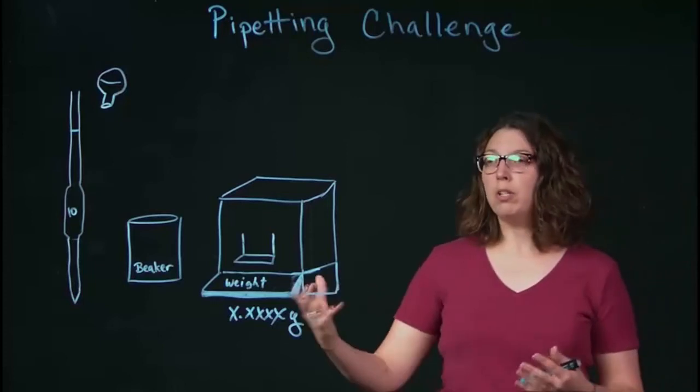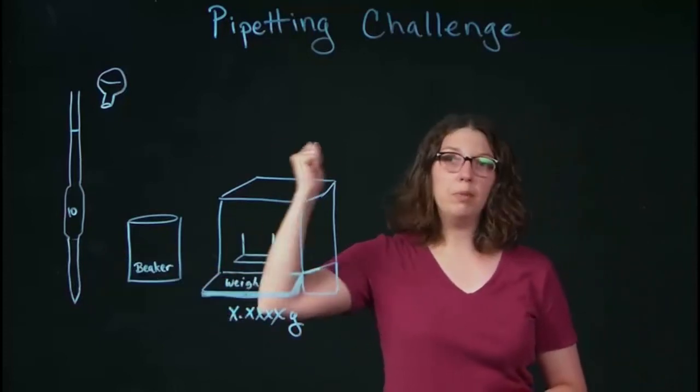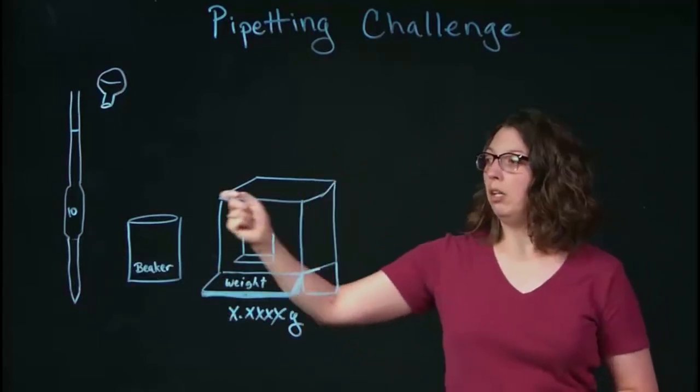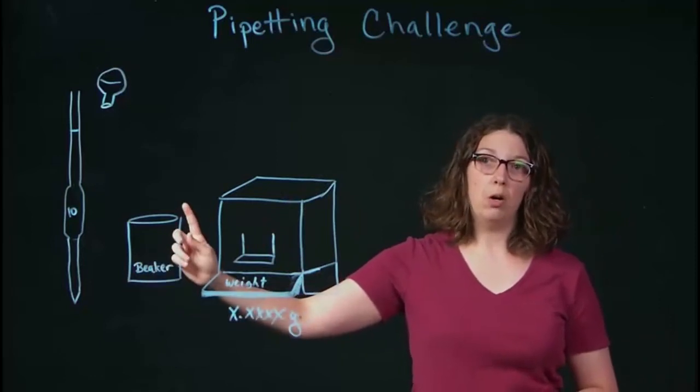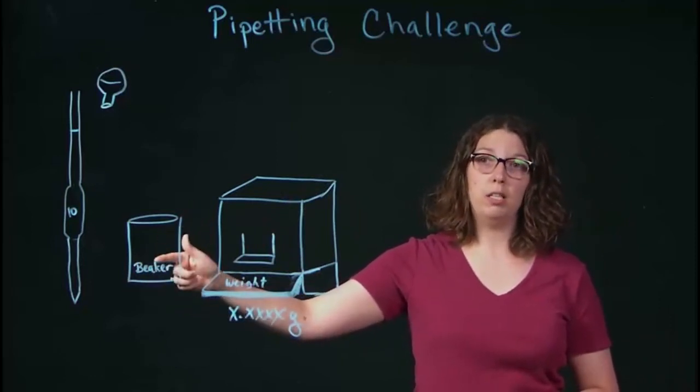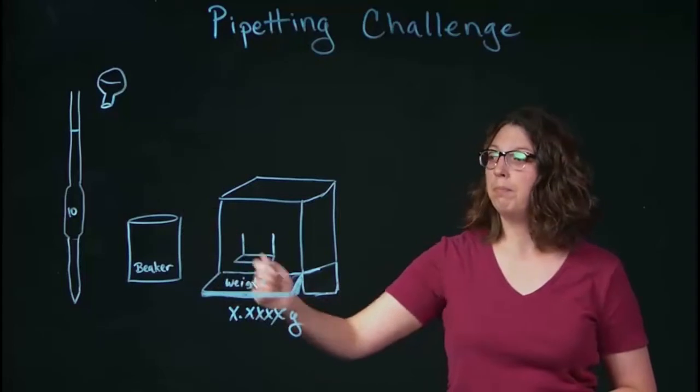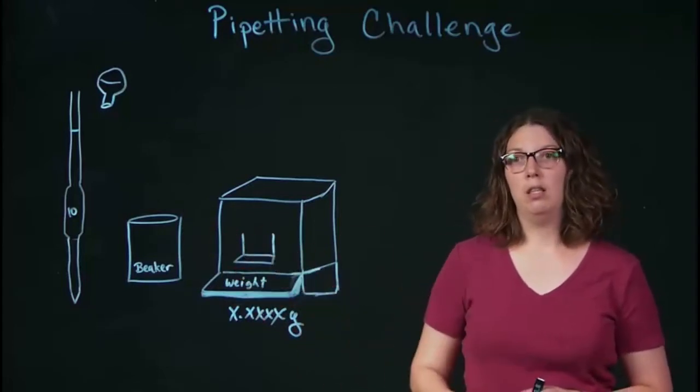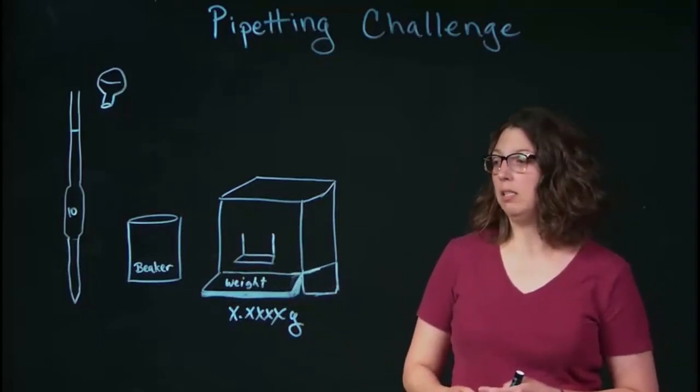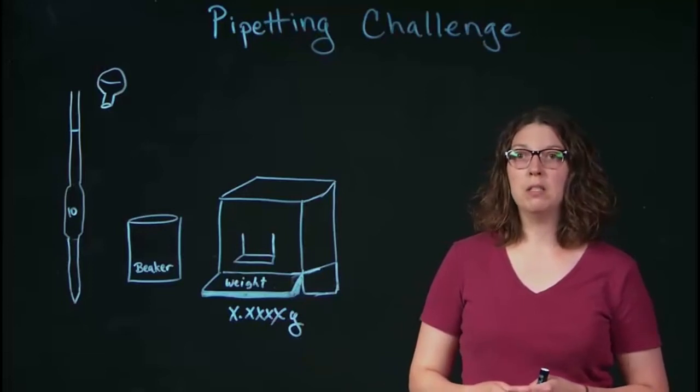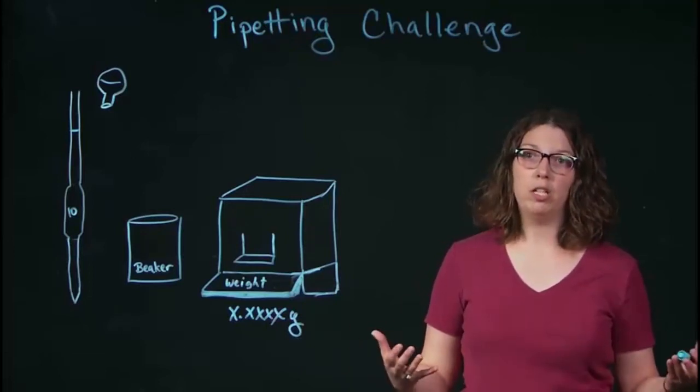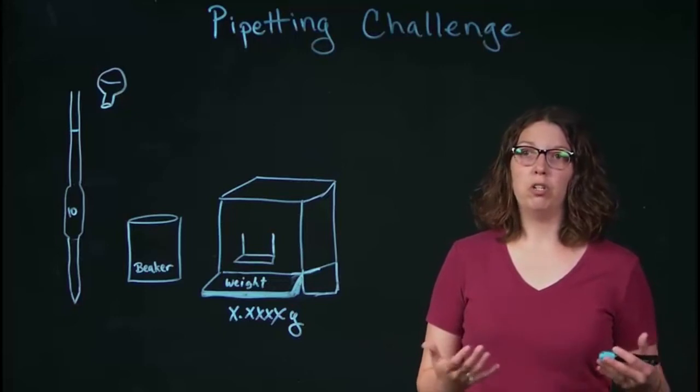So what we're going to do in lab is you're going to take a 10 milliliter pipet, you're going to pipet 10 milliliters of water into a clean, tared beaker. You're going to weigh that mass on a balance to four decimal places and you're going to convert that mass of water transferred into volume of water transferred.